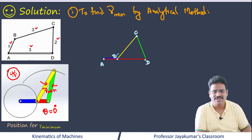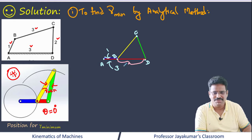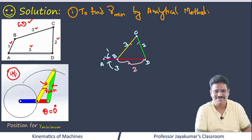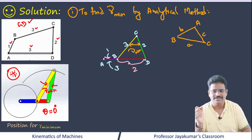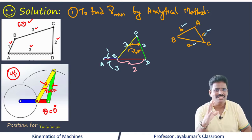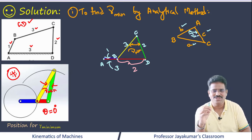In terms of lengths, the total length is 3 units; the crank is 1 unit, leaving 2 units. The coupler is 3 units and the output link is 2 units. We need to determine gamma minimum. Since we have a triangle with all three sides known and need to find an included angle, we can use the law of cosines.